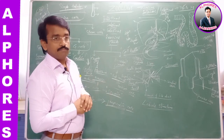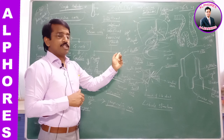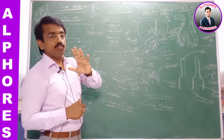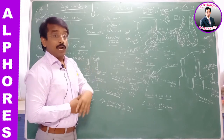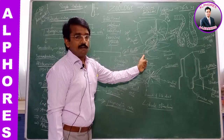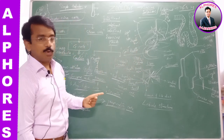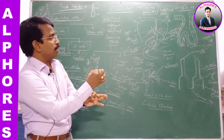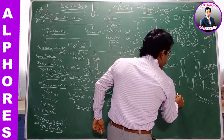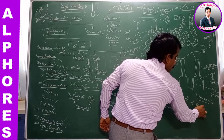The opening of the hepato-pancreatic duct into the duodenum is guarded by the sphincter of Oddi. Just as we have seen the cardiac sphincter, pyloric sphincter, and anal sphincter in the stomach region, here the opening of the hepato-pancreatic duct into the duodenum is guarded by the sphincter of Oddi. Another important sphincter to remember is the sphincter of Boyden.